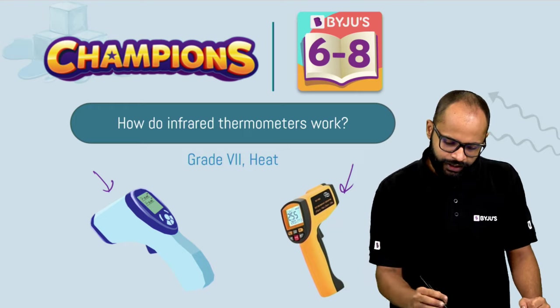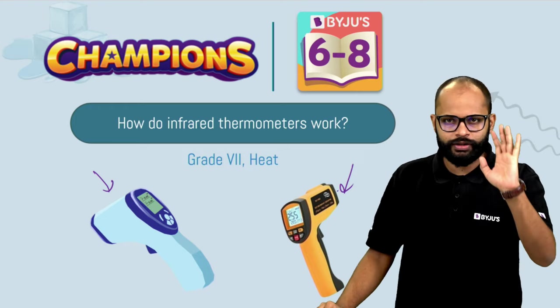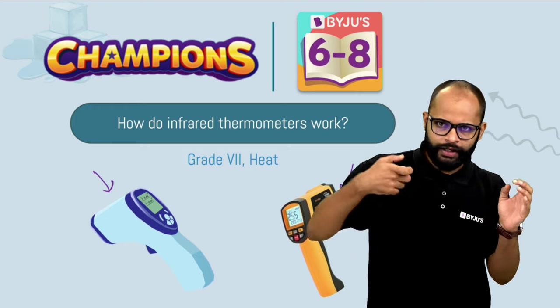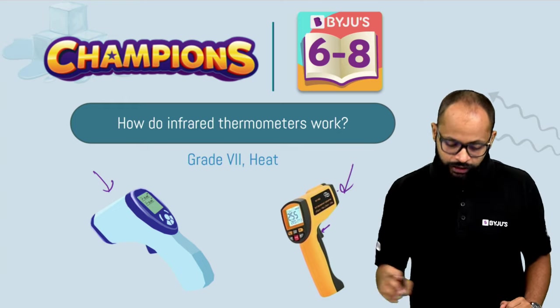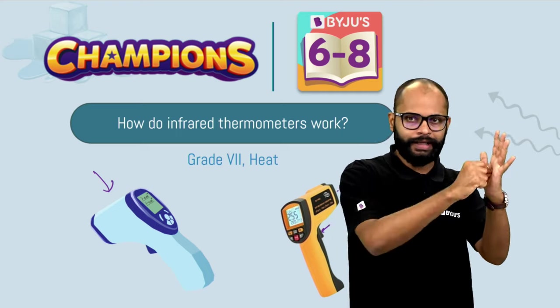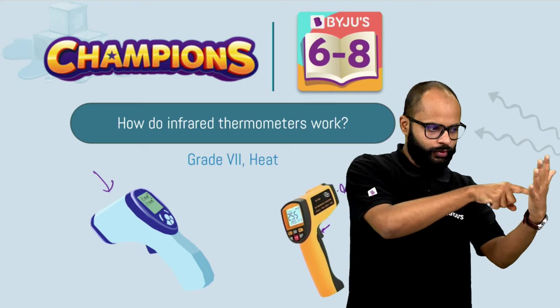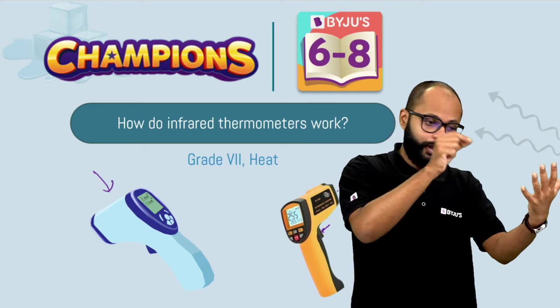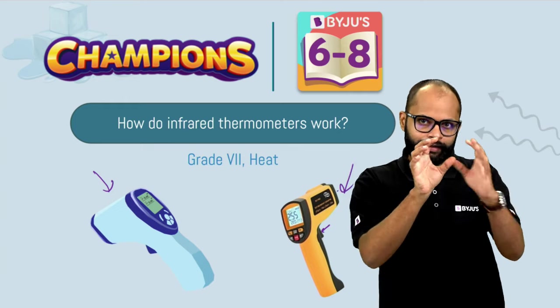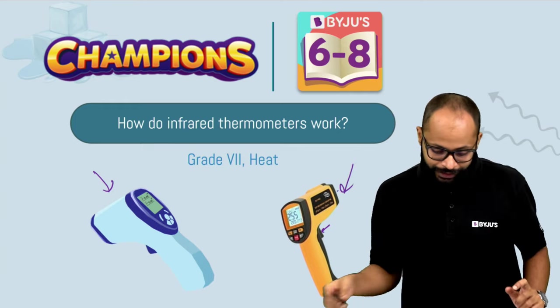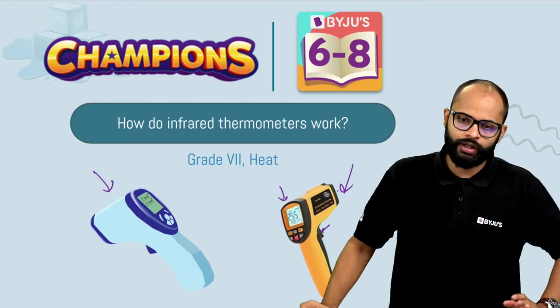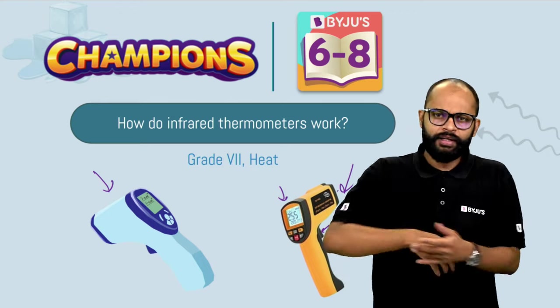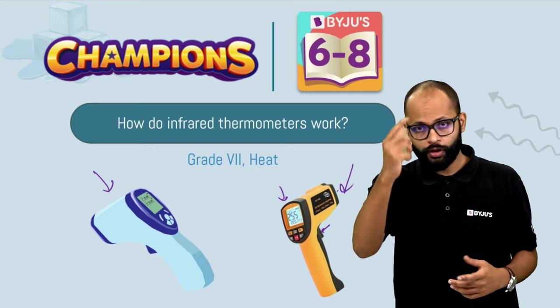And what happens there? There's a red dot if you have noticed. The moment you press this button, a red dot falls on the thing. Wherever this red dot falls, the reading comes in this display. They just point this to your forehead, watch the temperature. If it's normal, they would say yes, you can go.